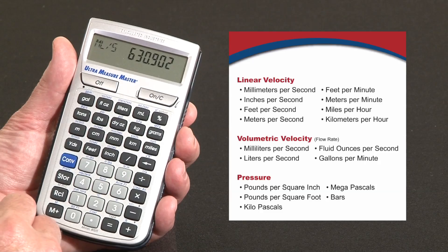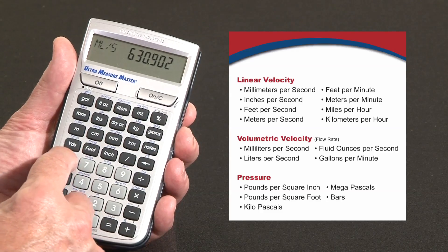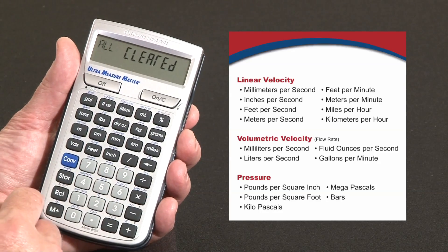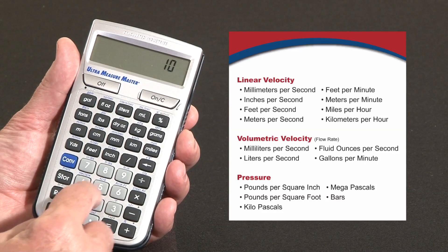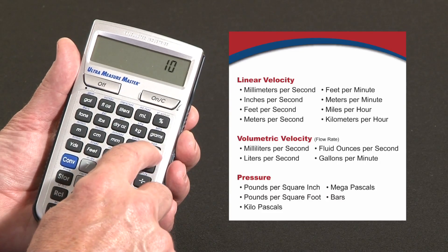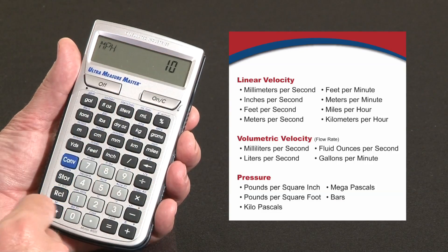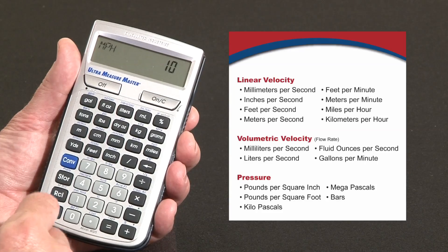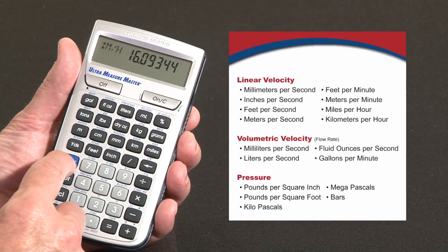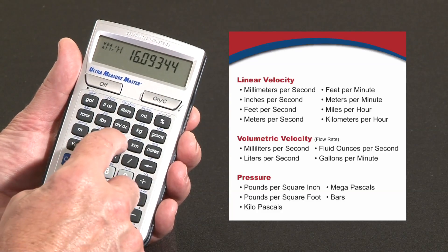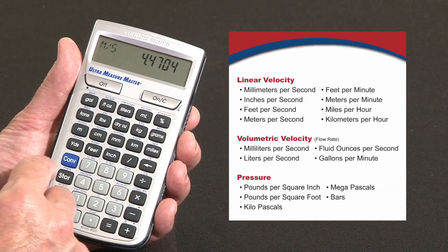There's also solutions built in for linear velocity. So say we've got something that's going at ten miles per hour. Over the miles key it says miles per hour, so convert ten miles per hour. How many kilometers per hour? You can convert that to millimeters per second, to meters per second.